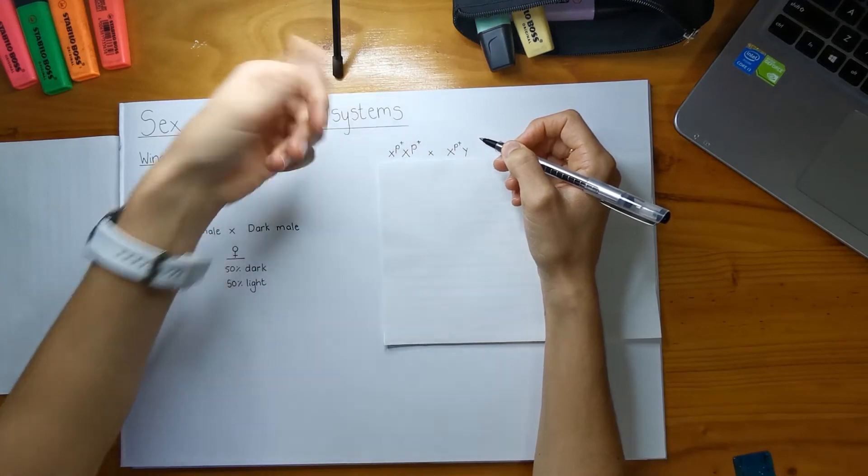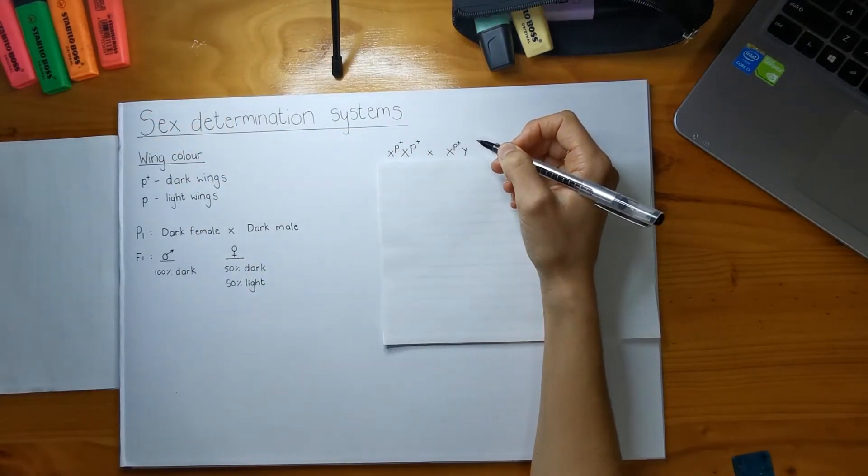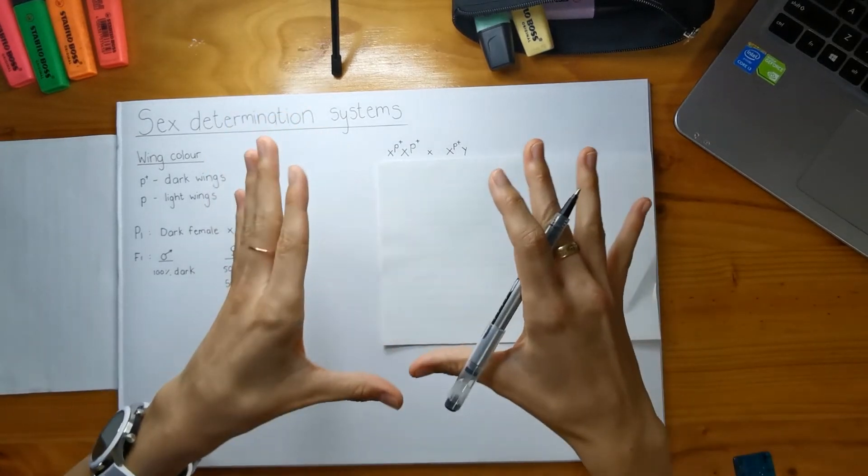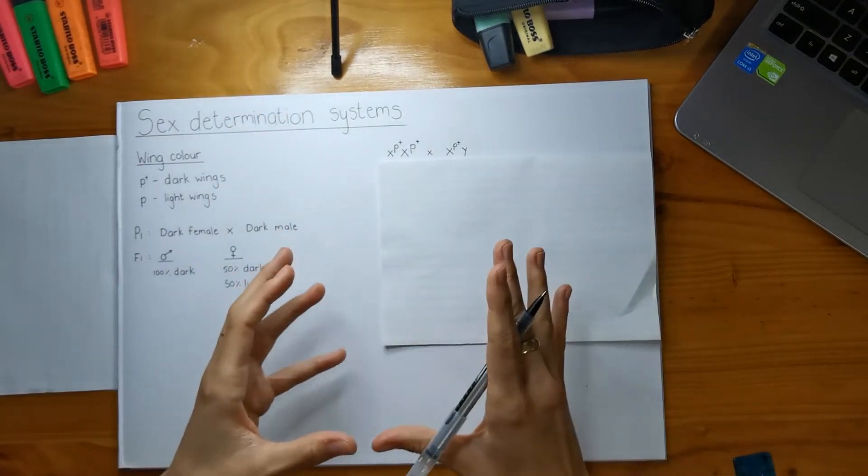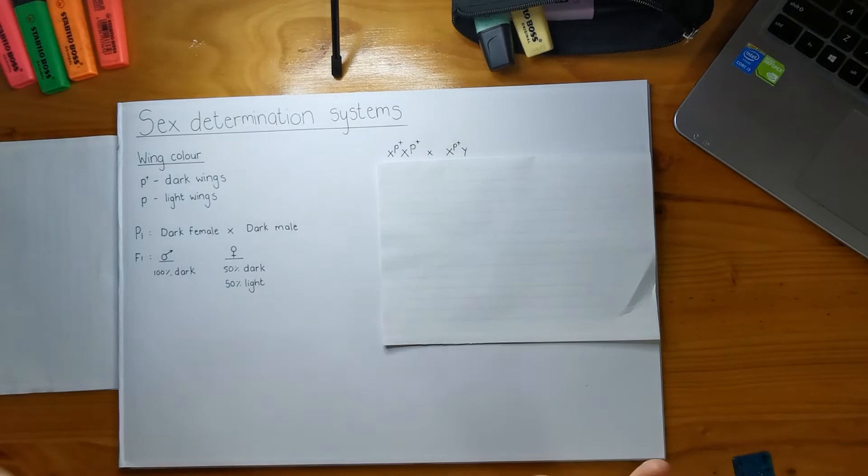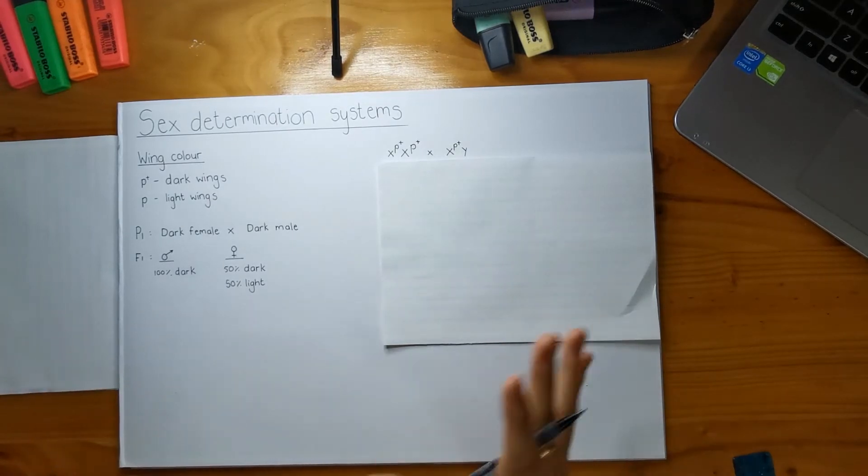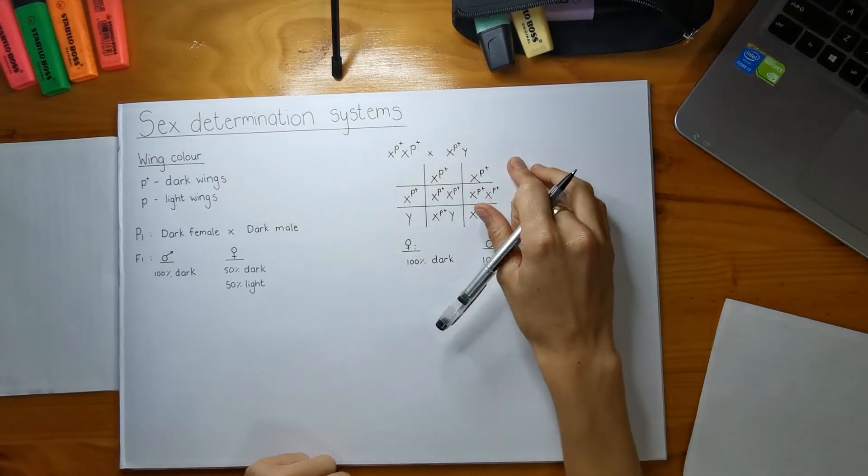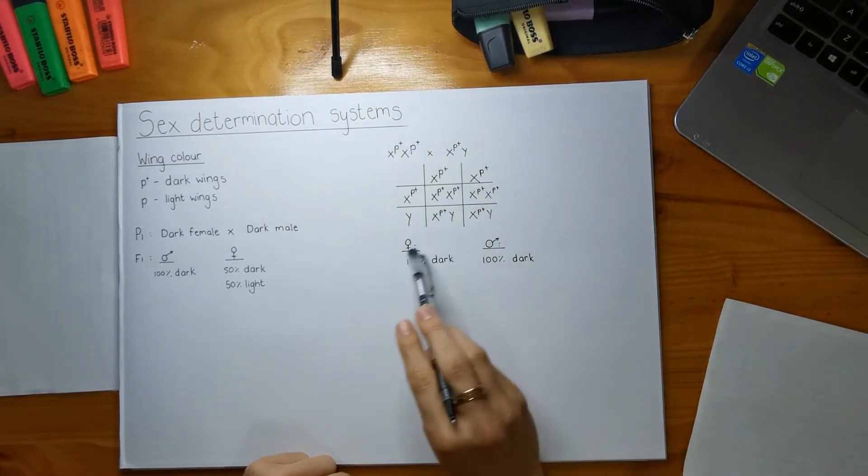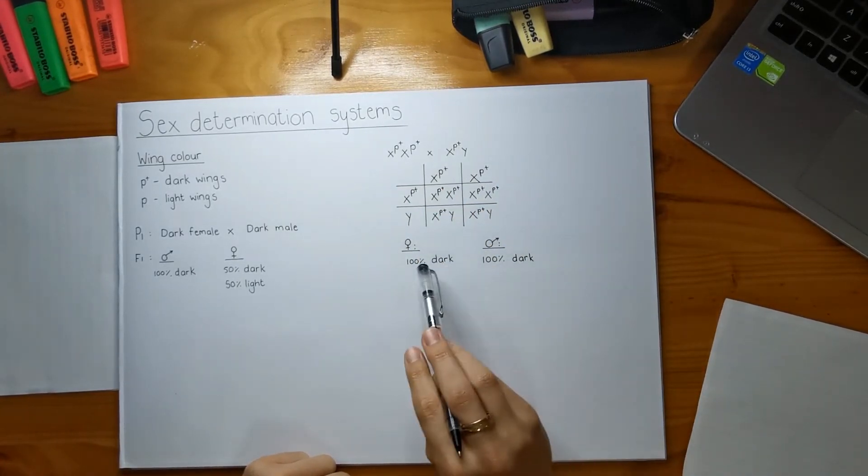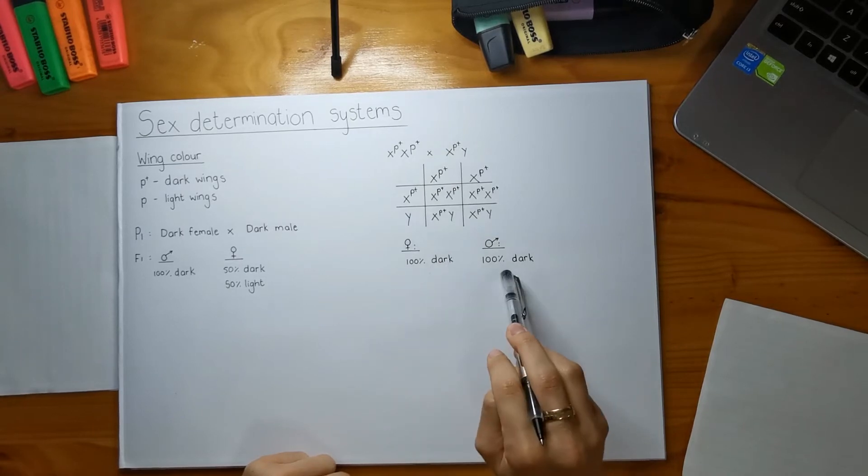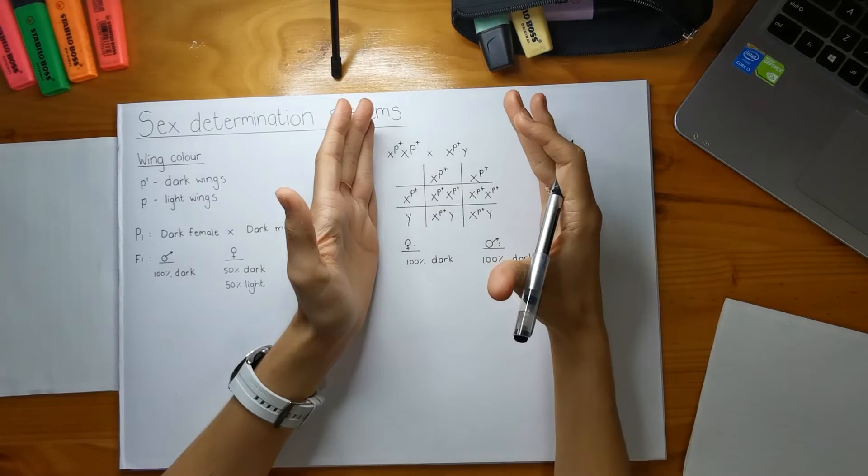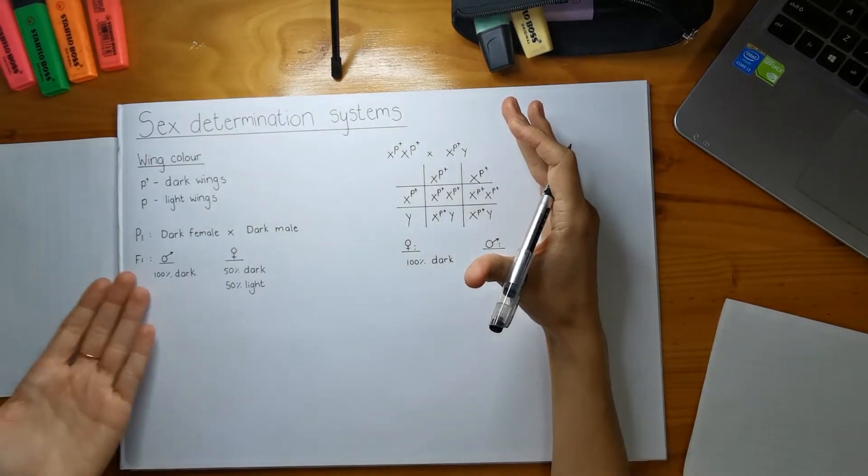The reason why I made the female homozygous for the P+ alleles is because you need to take the X from the female and then the Y from the male to create male offspring. So if they tell me in this question that 100% of the males are dark, both of these have to be P+ because if I had this one and we had the recessive allele P then one of the males would be light and then my whole question is wrong. Here is my cross and this is my progeny that I get. I get 100% dark females and I get 100% dark males. So this is the wall.